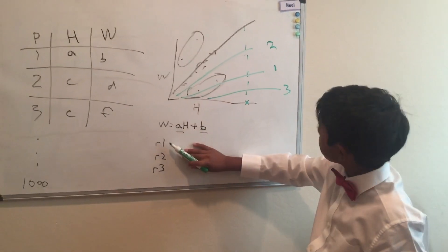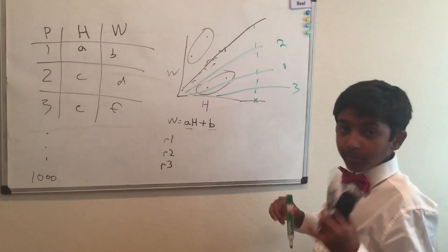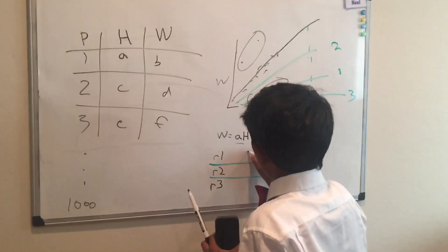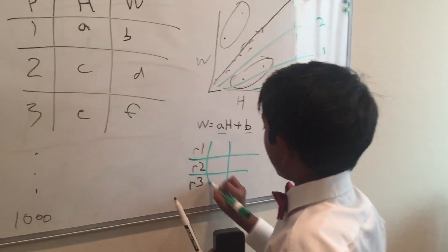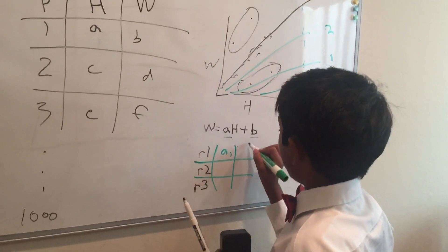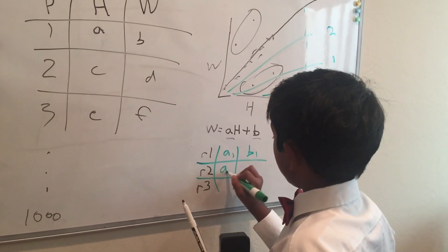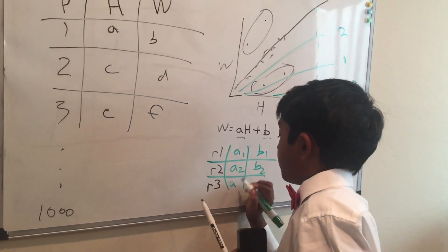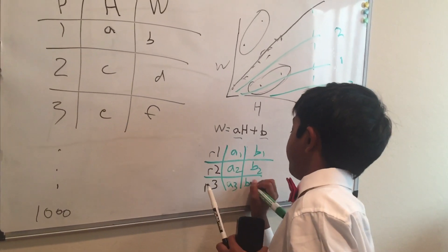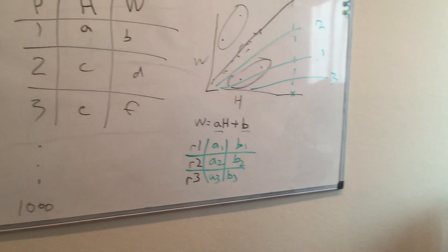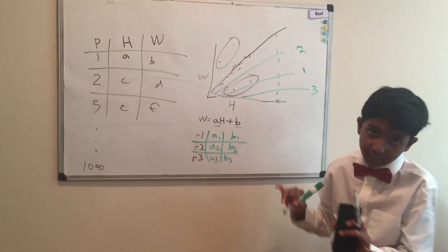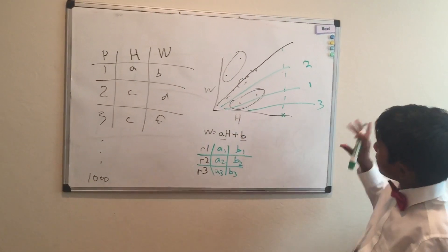The first one you do, first random experiment, second random experiment, third random experiment. For these, you have a1, b1, you have different values of a and b, which you randomly generated. Let's say you got this. It could be anything.